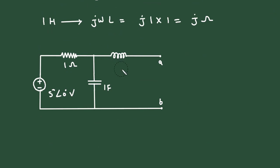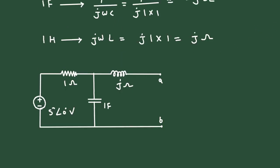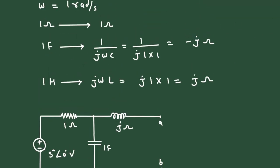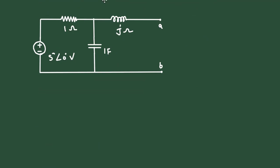This 1 henry will change to j ohm, and this 1 farad will change to minus j ohm. This will be minus j ohm.